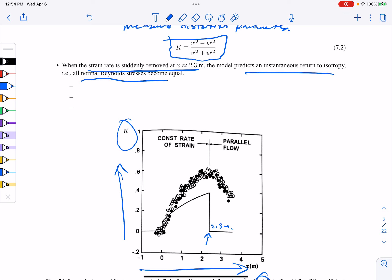In experiment, the turbulent approaches isotropy at a uniform rate. And the model predicts a discontinuity which isn't there. And this is just one example.